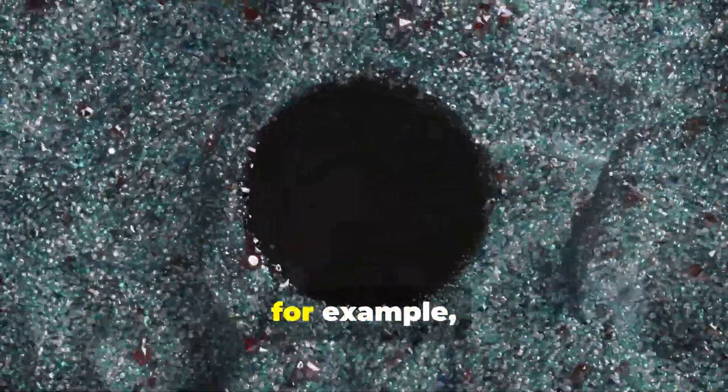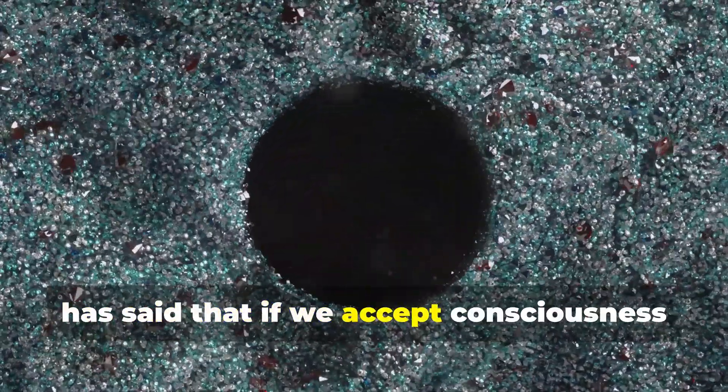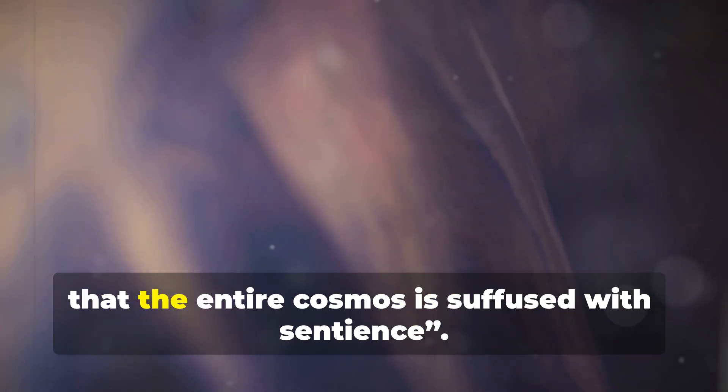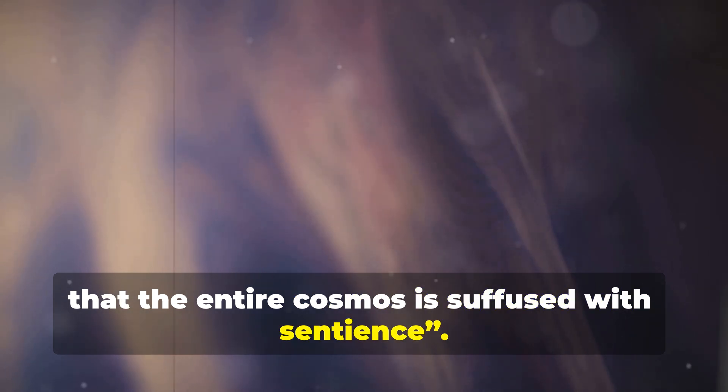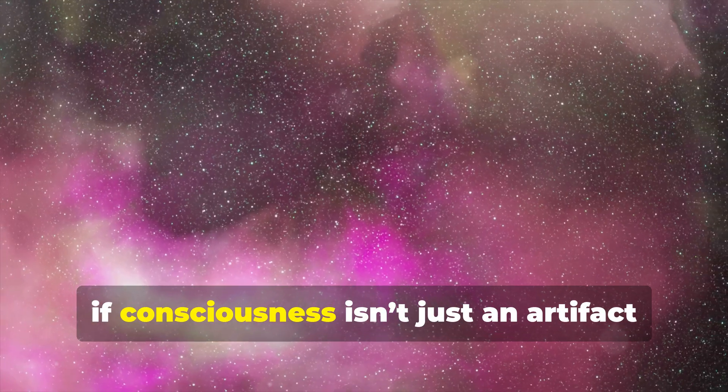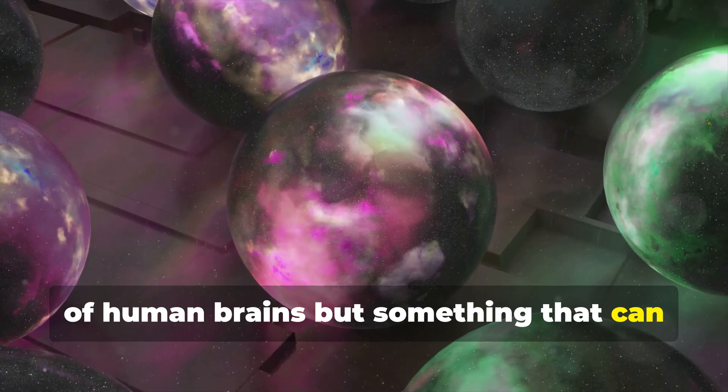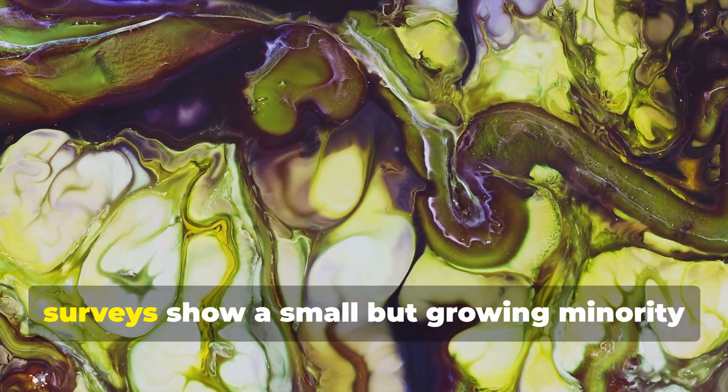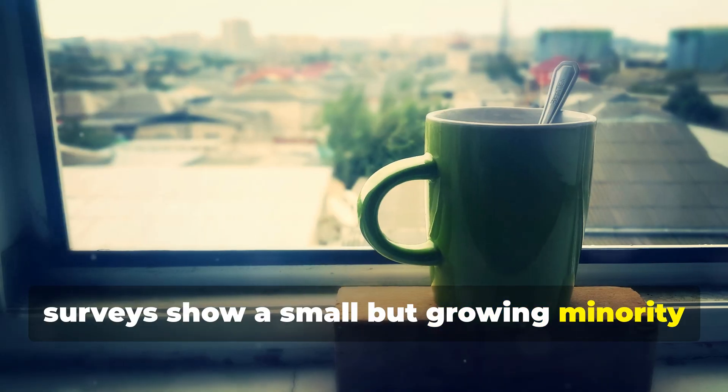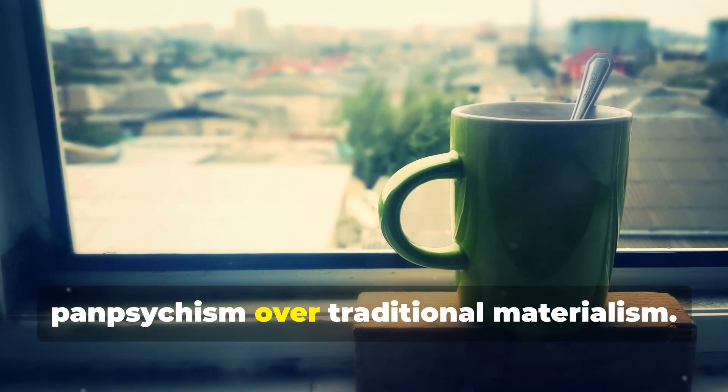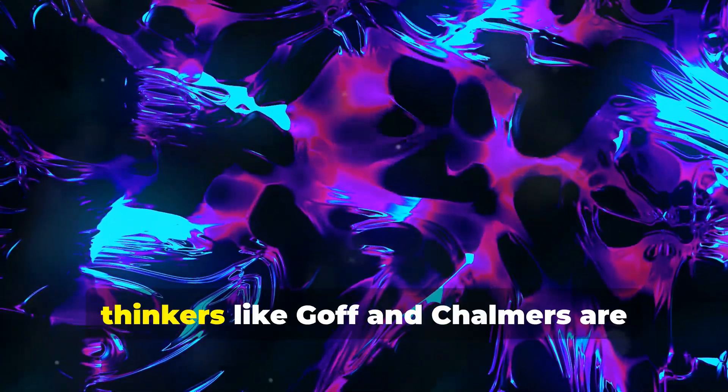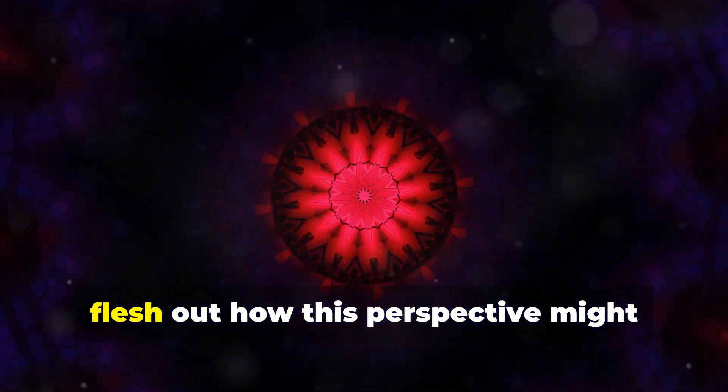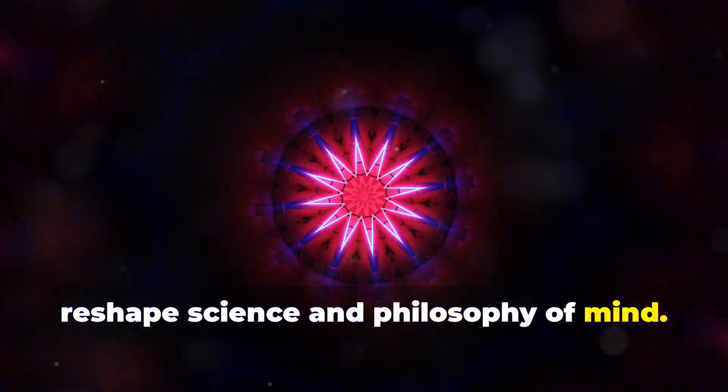Renowned neuroscientist Christoph Koch, for example, has said that if we accept consciousness as a fundamental, irreducible phenomenon of nature, then it is a simple step to conclude that the entire cosmos is suffused with sentience. In other words, if consciousness isn't just an artifact of human brains, but something that can exist in principle anywhere, why not everywhere? Even within philosophy, surveys show a small but growing minority of philosophers are open to views like panpsychism over traditional materialism. And as we've seen, thinkers like Goff and Chalmers are actively discussing it, hosting workshops and writing books to flesh out how this perspective might reshape science and philosophy of mind.